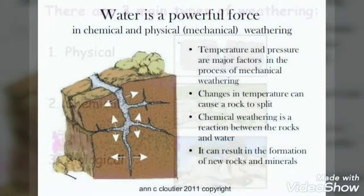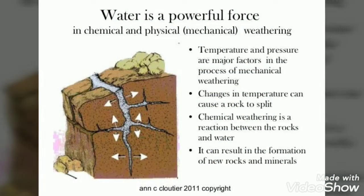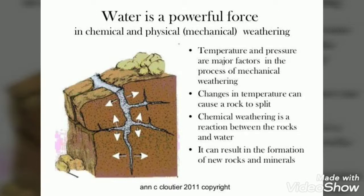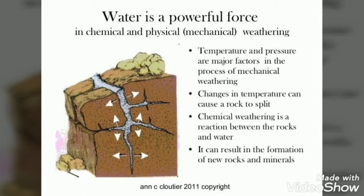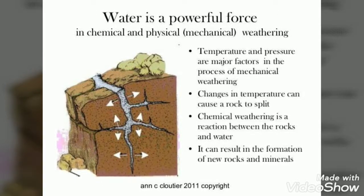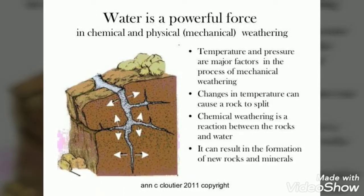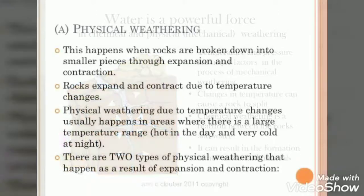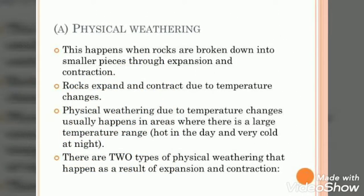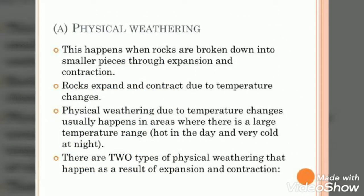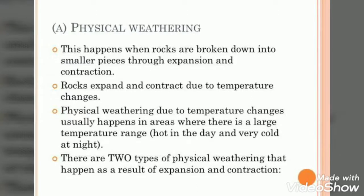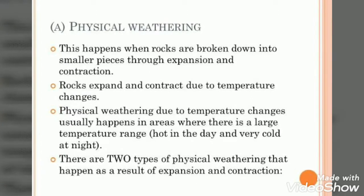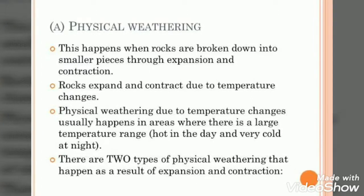A large rock, due to weathering, may be broken into small chunks of rocks and then to many more smaller rocks till they finally become soil or dust. This process usually happens near the surface of the earth. The cool nights and the hot days cause the rocks to expand and contract.